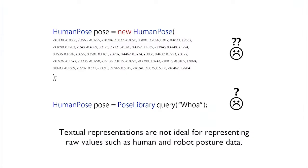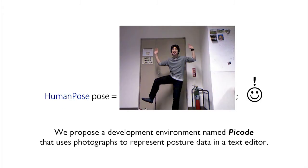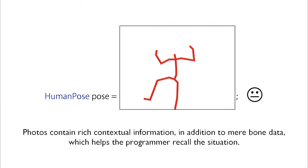Textual representations are not appropriate for representing complex flow values. We propose a development environment named Picode that uses photographs to represent posture data in a text editor. Photos contain rich contextual information in addition to mere-born data.